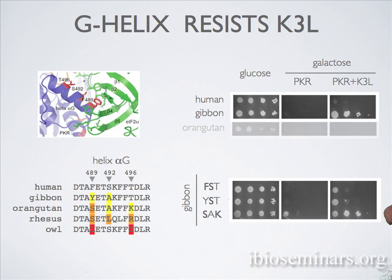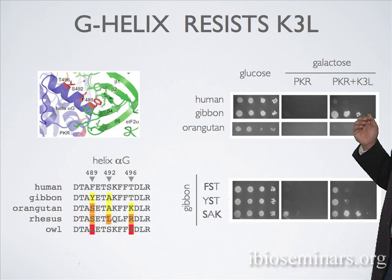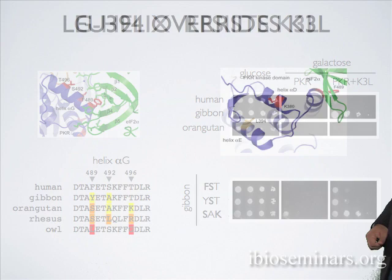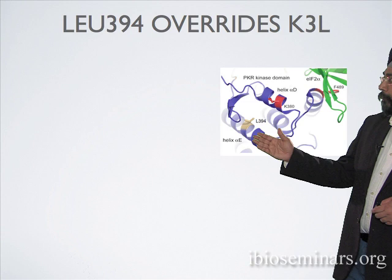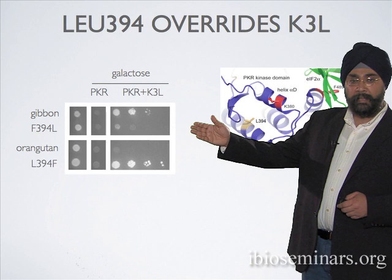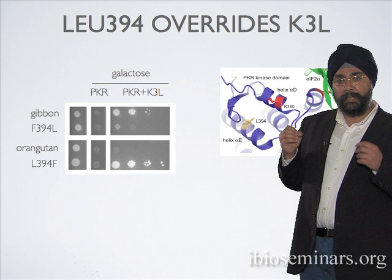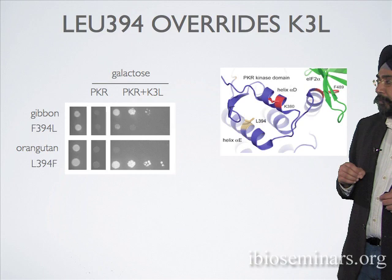This also revealed something we had missed earlier: even though orangutan PKR is completely resistant to K3L mimicry, the orangutan G helix is not resistant on its own — some other component of the PKR backbone in orangutan is necessary. We mapped that to a single residue in helix alpha-E, very far away from helix alpha-G. Individual residue changes between gibbon and orangutan have the ability to switch from susceptible to resistant and back, really highlighting the significant power of even individual mutations in individual residues.